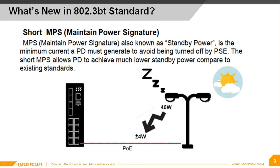The short MPS refers to the minimum power consumption drawn by a PD during standby mode in order to inform a PSE that the PD is still alive. Under the previous PoE standards, a PD had to draw power from a PSE at a 23% duty cycle, meaning the PD is on 23% of the time but off 77% of the time, which leads to unacceptably large standby power if a large number of PDs, such as LED lighting, are deployed in an office building. Under the new standard, the duty cycle has been reduced to 2%, so standby power has been minimized by a factor of 10. In this example, the street lamp will only draw 4 watts during standby mode.